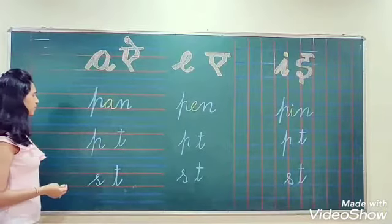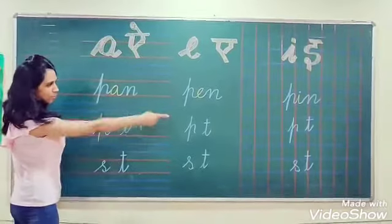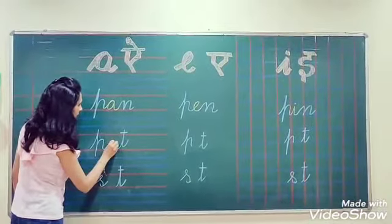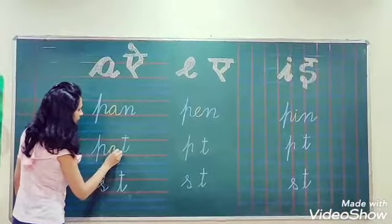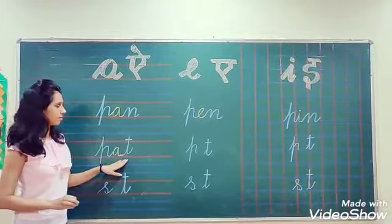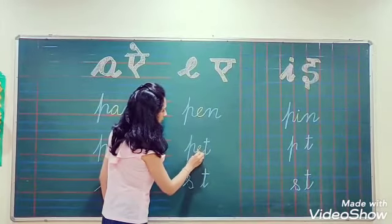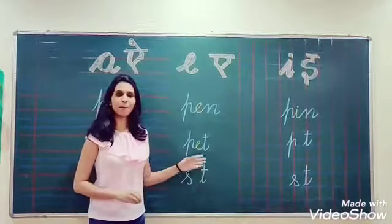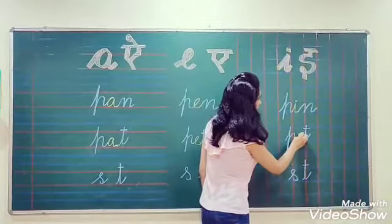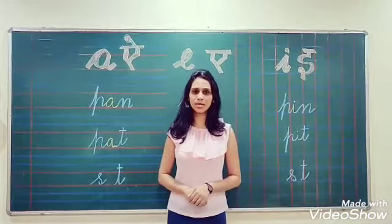I have some more examples. Second example: again I have P and T. When I insert A in that, it will become 'Pat'. Similarly, when I insert E, it will become 'Pet'. And when I insert I in that, it will become 'Pit'.